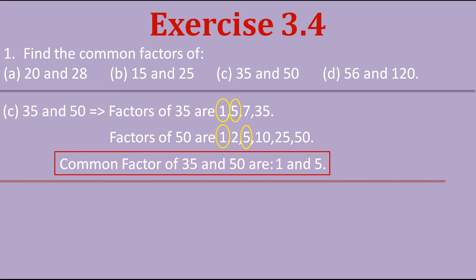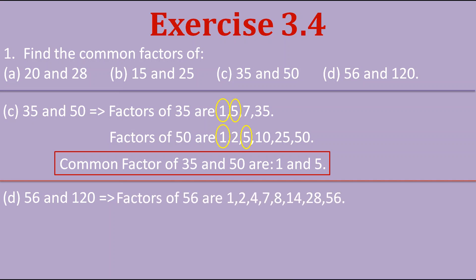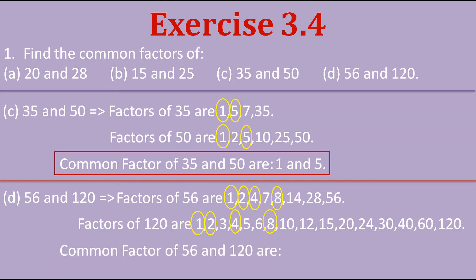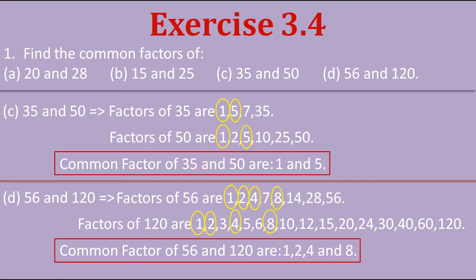Next is 56 and 120. The factors of 56 are 1, 2, 4, 7, 8, 14, 28 and 56, and the factors of 120 are many numbers. The common factors are 1, 2, 4 and 8. So the common factors of 56 and 120 are 1, 2, 4 and 8. You must find all factors of a given number — if you miss any, you may miss a common factor and lose marks.